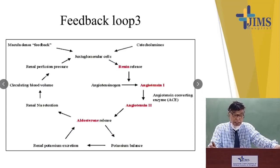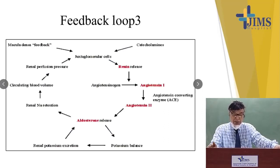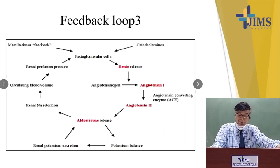On the other hand, aldosterone also causes renal sodium retention. Renal sodium retention increases circulating blood volume, and renal perfusion pressure also increases, thereby affecting the juxtaglomerular apparatus. Once hypovolemia or catecholamine excess occurs, the juxtaglomerular cells are activated. Via macula densa feedback, they alter sodium and potassium balance and thereby maintain the feedback loop, maintaining homeostasis of blood volume and electrolytes.